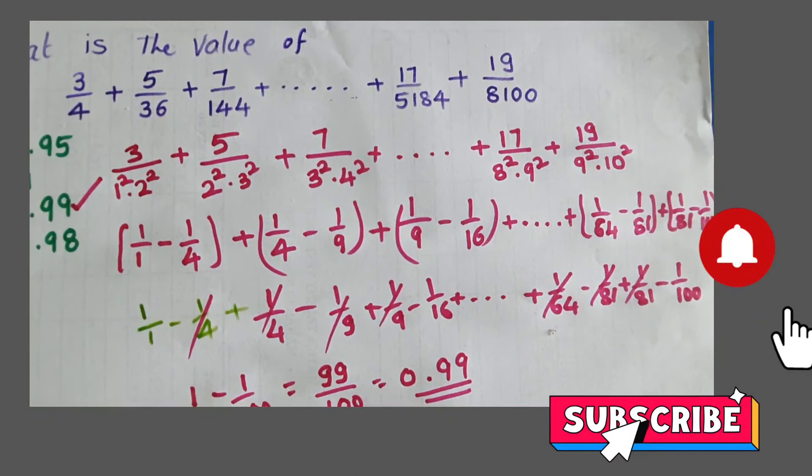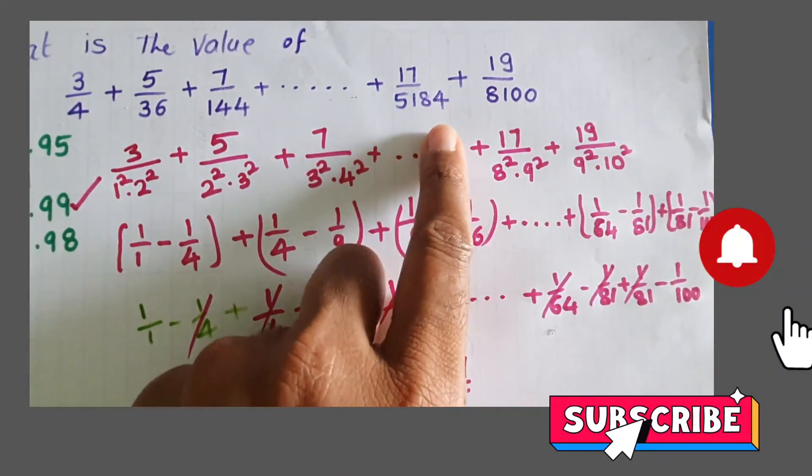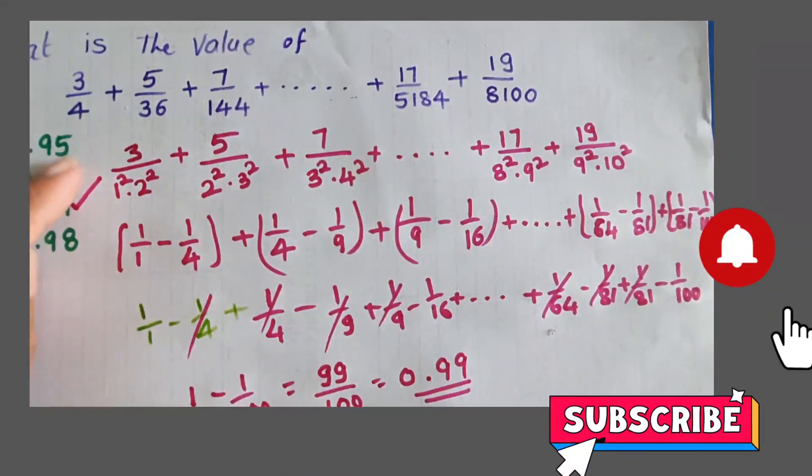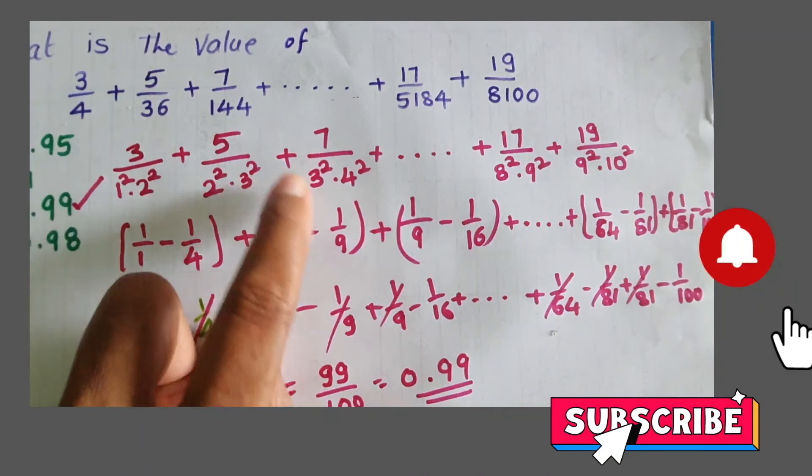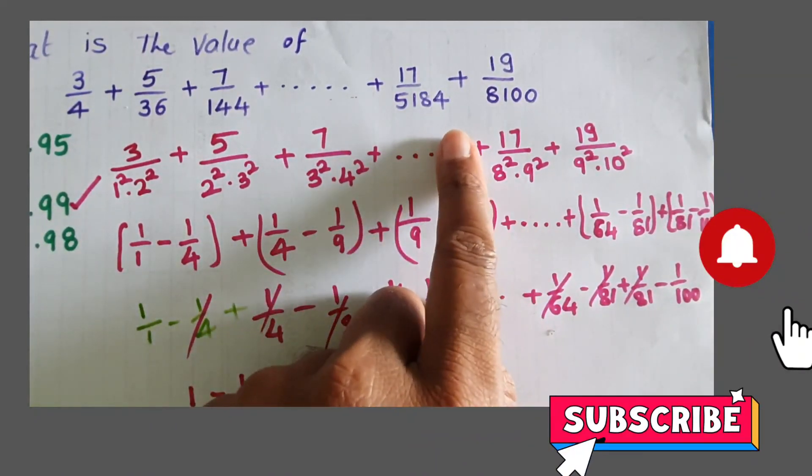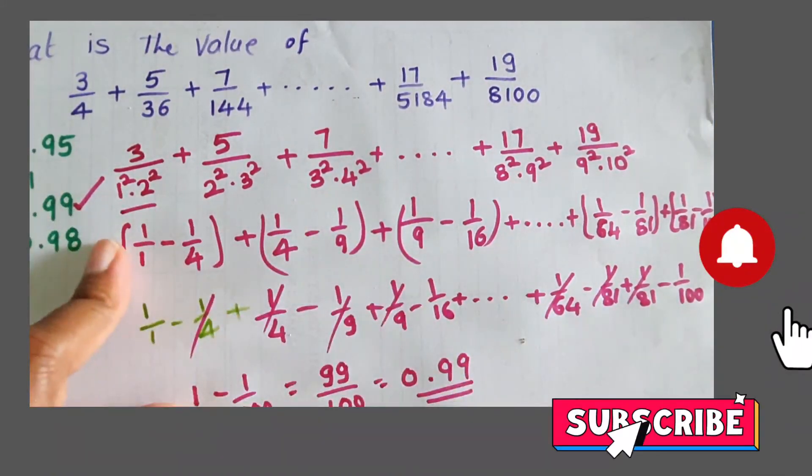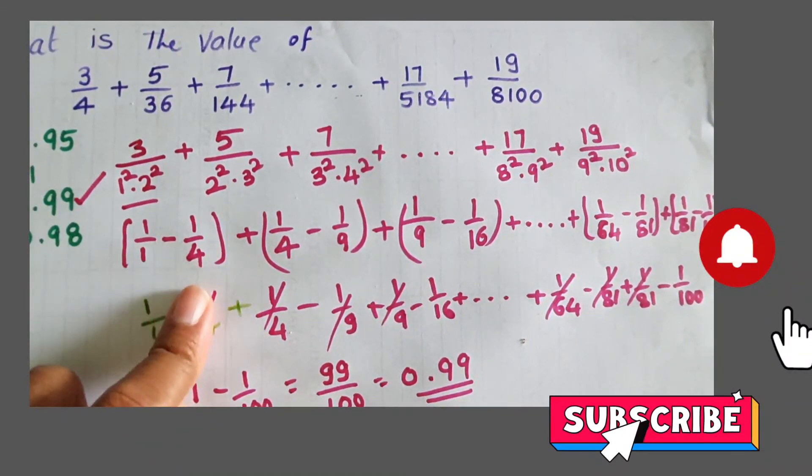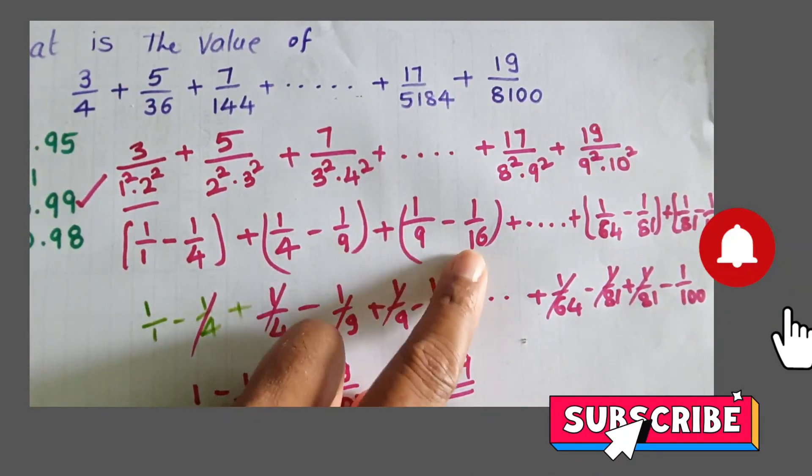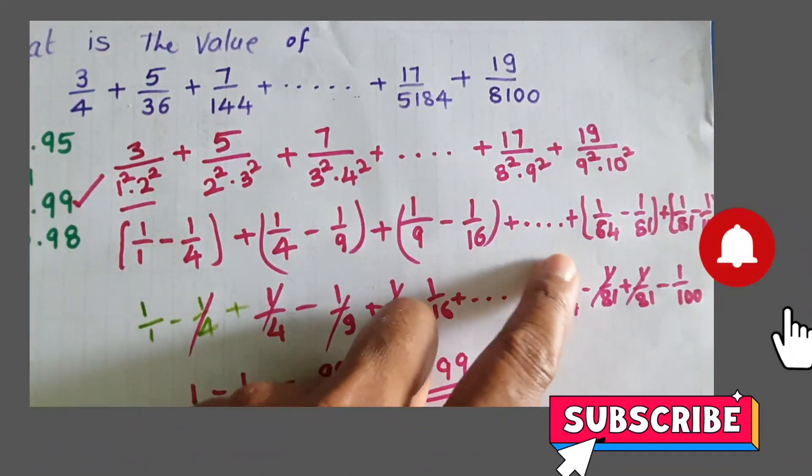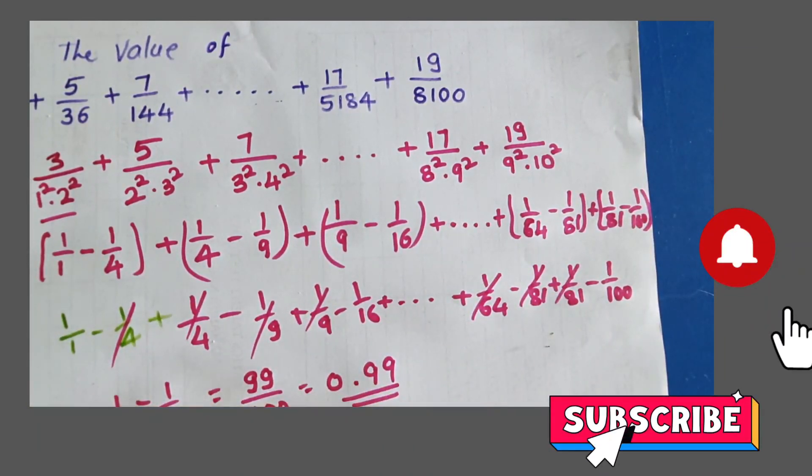Once again, observe the question: 3/4 + 5/36 + 7/144 and so on, 17/5184 + 19/8100. First rewrite each term using square numbers: 2 squared, 3 squared, 4 squared, and so on.